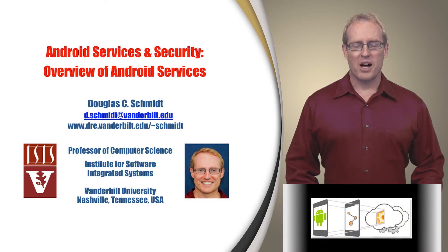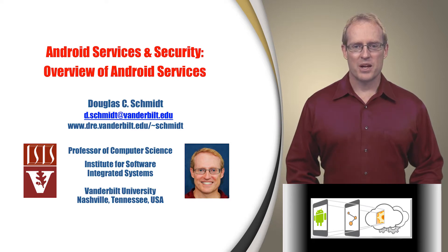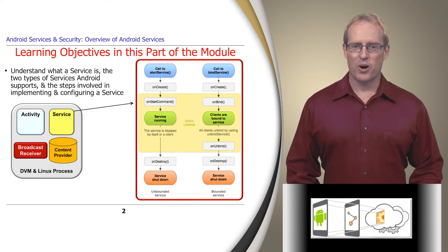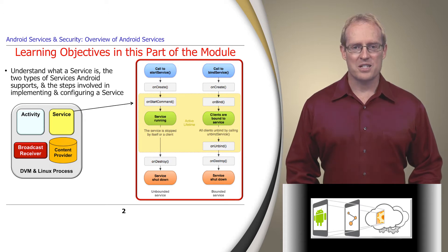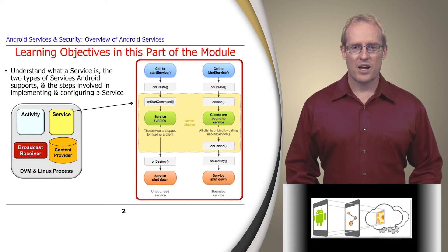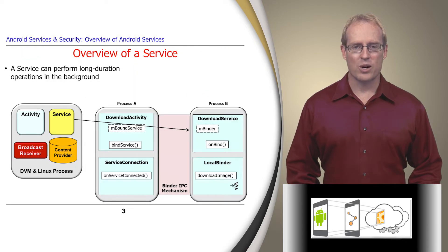Welcome to the first part of the module on Android Services and Local Interprocess Communication Mechanisms, which provides an overview of started and bound services. In this part, we discuss what a service is, summarize the two types of services supported by Android, and outline steps for implementing both types of services and configuring services into applications.